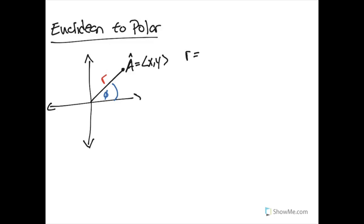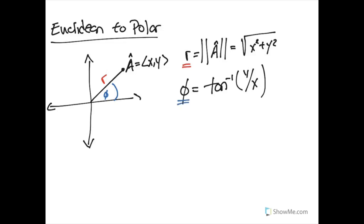We can use our normal trigonometry and say, well, R is going to be equal to the magnitude of that vector, which would be equal to the square root of X squared plus Y squared. And then this particular angle right here would be the tangent inverse of Y over X. So this transform moves us from a Euclidean or rectilinear system back into a polar.